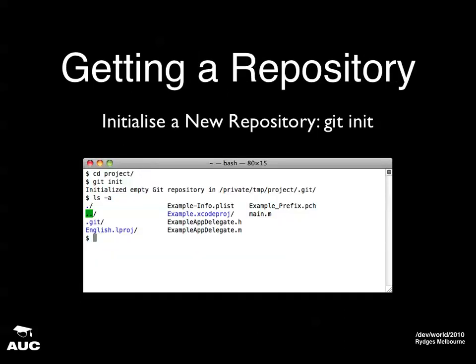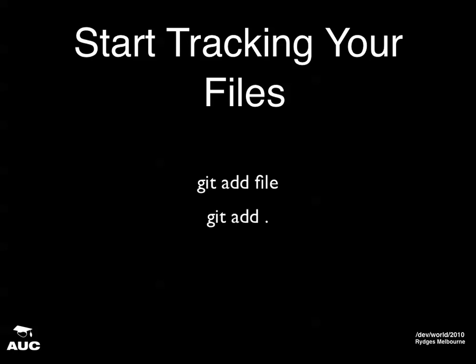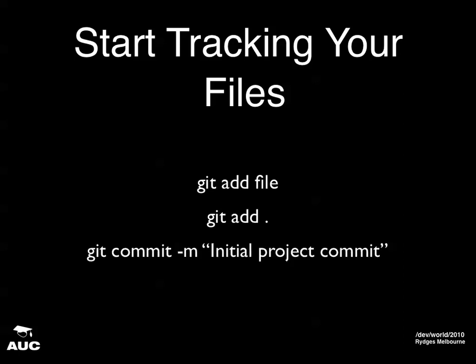Next you're going to want to get a repository, and you do that with 'git init'. That's all you need to type, and it creates a .git directory inside the working directory you were in when you executed the command — that's your new empty repository. To start tracking files with Git, you need to do 'git add'. You can do 'git add file', 'git add *', or 'git add .' — the dot will add the current directory and all files in it and in all sub-directories. Be careful you don't have anything in there you don't want. Finally, you do a commit to put them into the repository.